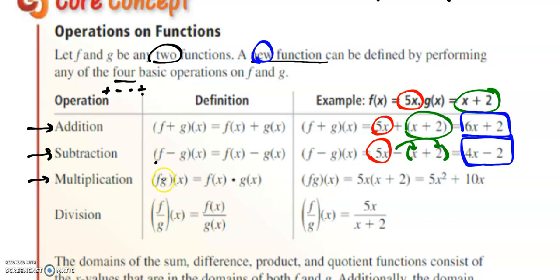Multiplying fg, so f times g(x) is equal to f(x) times g(x). So here's f(x), here's g(x). Again, I'll distribute, this time the 5x, and I create this brand new function, 5x² + 10x.